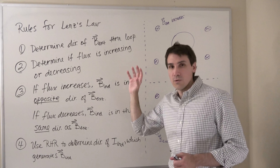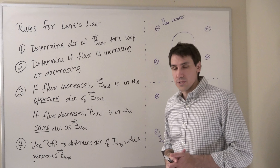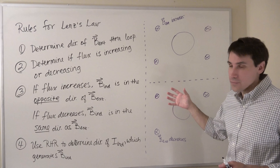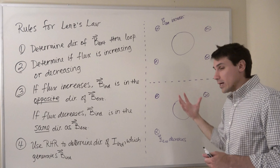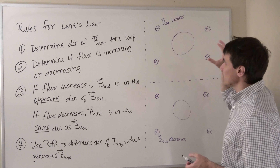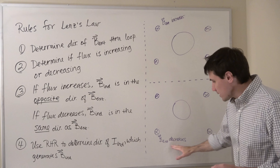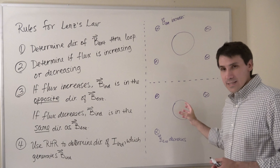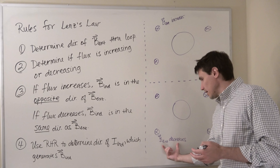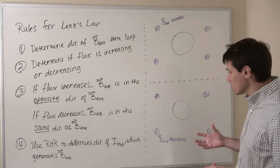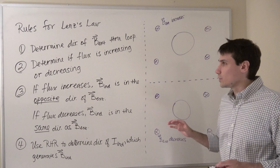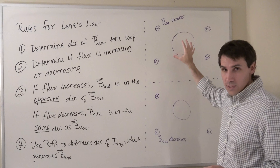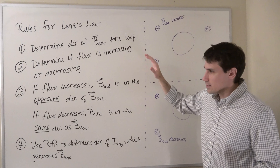The next step is to determine whether the flux is increasing or decreasing. In the top example, our external magnetic field is increasing. Our area is not changing, so our flux — magnetic field dotted with area — is clearly increasing. In the bottom example, our external magnetic field is decreasing and the area is not changing. When the magnetic field gets smaller and nothing else changes, our flux is going to decrease. So for the top example, the flux is increasing; for the bottom example, the flux is decreasing.